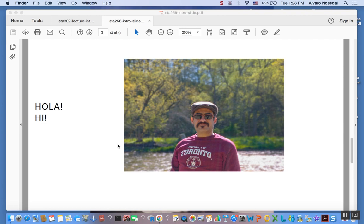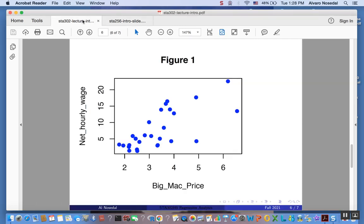First, let me show you a graph, a scatterplot that I prepared for you. Allow me to tell you a bit more about that scatterplot. Figure 1 shows you Big Mac prices against net hourly wages in US dollars for 27 countries.